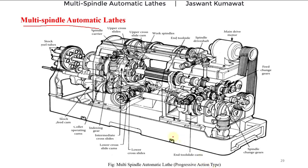In these automatic lathes there are six spindles mounted on a spindle carrier. So multi spindle automatic lathes consist of a spindle carrier on which a number of spindles are mounted. In front of these spindles there is a tool slide. This tool slide does not rotate but can move forward and backward to perform operations on the workpieces.